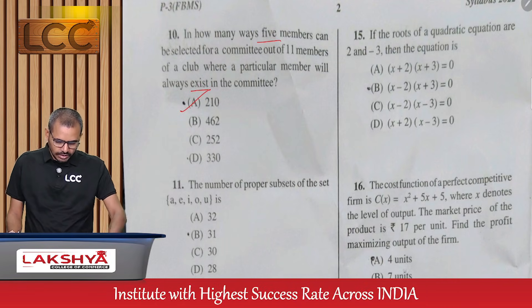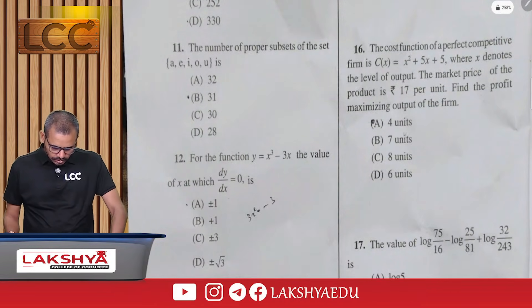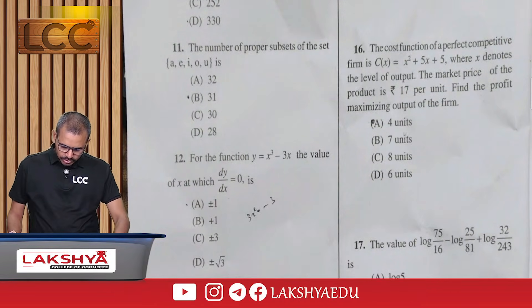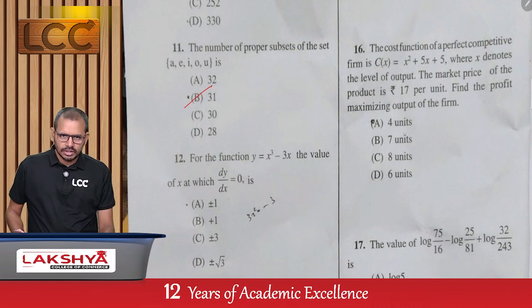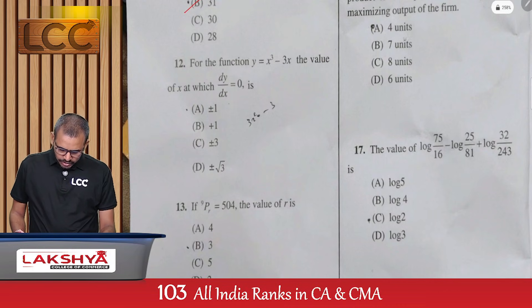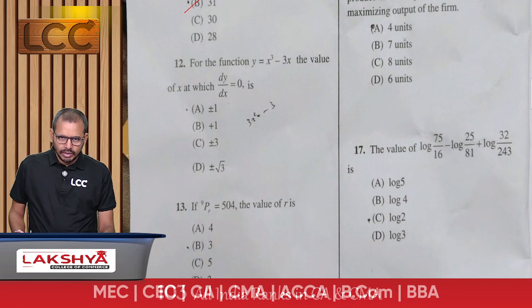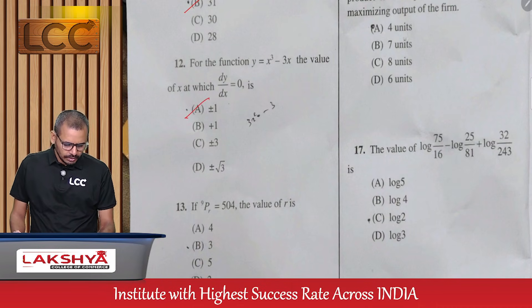Question 11: The number of proper subsets — option B. Question 12: For the function y = x³ - 3x, find the value of x when dy/dx = 0 — option A.